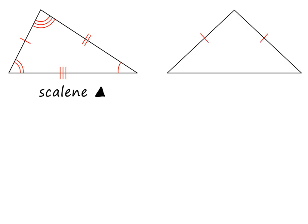Do you remember what we call a triangle with two equal sides? It is called an isosceles triangle. This triangle also has two equal angles, which lie at the ends of the equal sides, or opposite the equal sides.